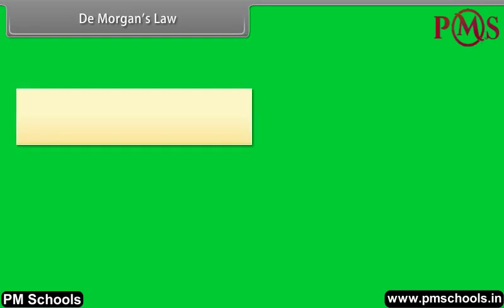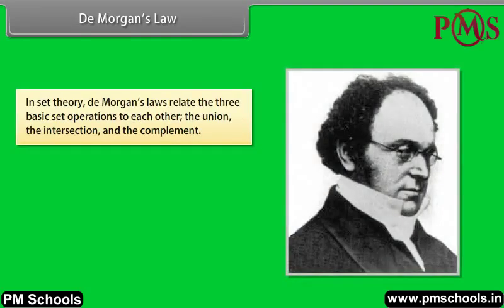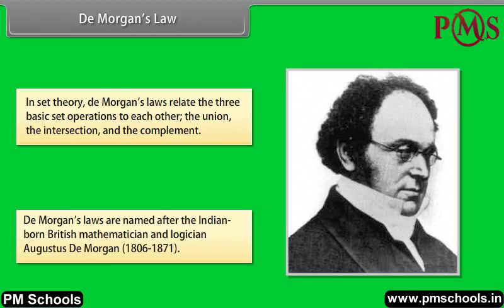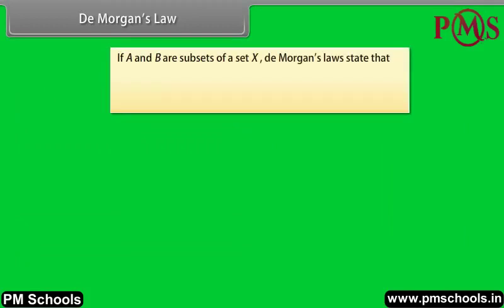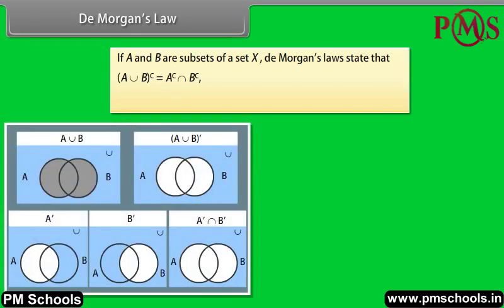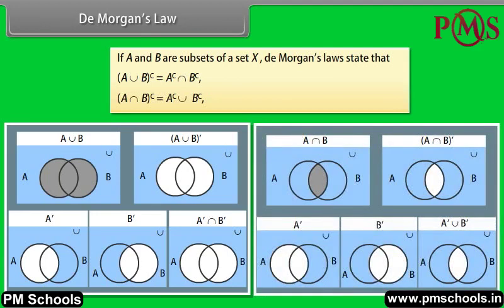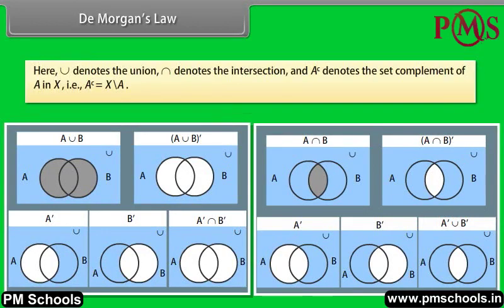De Morgan's Law. In set theory, De Morgan's Laws relate the three basic set operations to each other: the union, the intersection, and the complement. De Morgan's Laws are named after the Indian-born British mathematician and logician Augustus De Morgan. If A and B are subsets of a set X, De Morgan's Laws state that: complement of (A union B) is equal to complement of A intersection complement of B; and complement of (A intersection B) is equal to complement of A union complement of B.